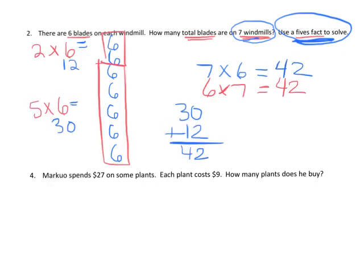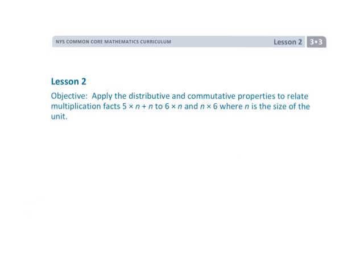The last question says: Marquo spends 27 dollars on some plants; each plant costs 9 dollars — how many plants does he buy? We use skip counting or repeated addition: 9, then add another 9 to get 18, then add another 9 to get 27. Three groups of nine equals 27, so the answer is 3. We don't want to use division yet at this point.